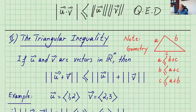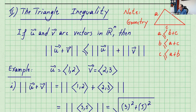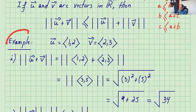Now let's go over the triangle inequality. It says the norm of u plus v is less than or equal to norm of u plus norm of v. From geometry, when we have a triangle, we know that side a is less than or equal to side b plus c, side b is less than or equal to a plus c, and side c is less than or equal to a plus b. Let's take a quick example with the same vectors u with components 1, 2 and v with components 2, 3.